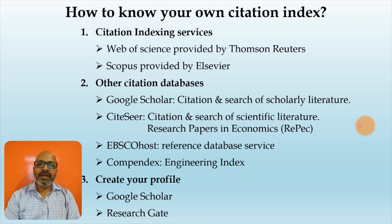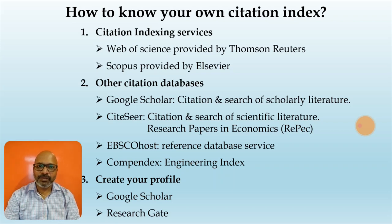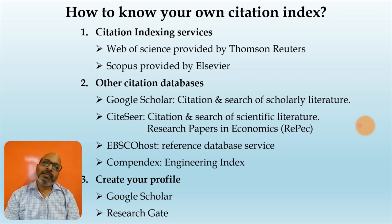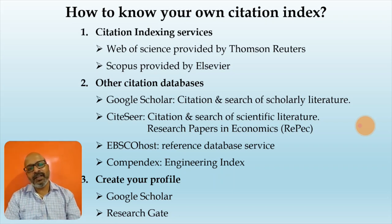Now, how to know your own citation index. Citation index services are provided by websites such as Web of Science, which is provided by Thomson Reuters, and Scopus, which is provided by Elsevier. Other citation databases include Google Scholar, which has citation and search of the scholarly literature, CiteSeer, EBSCOhost, and Compendex. If you create your own profile in Google Scholar and ResearchGate, you will find your own citation index created automatically.